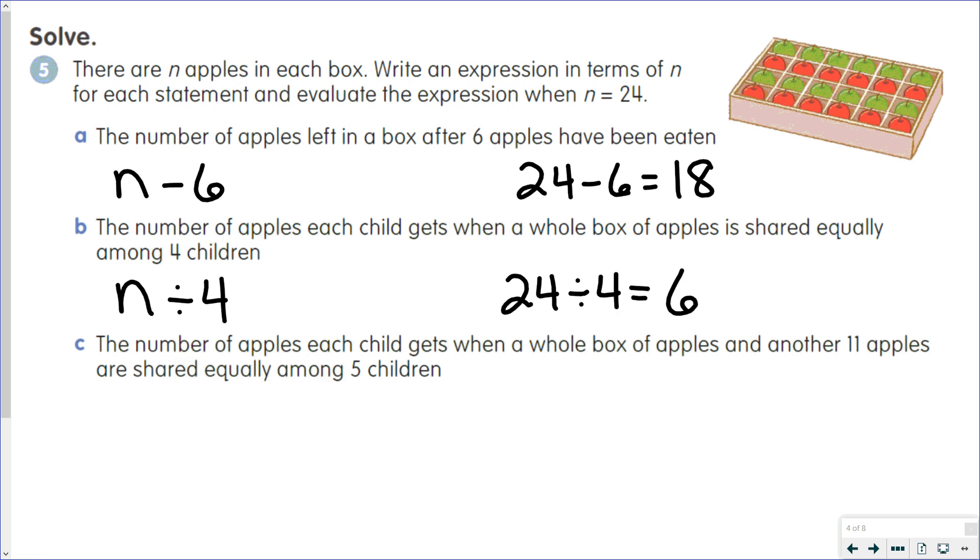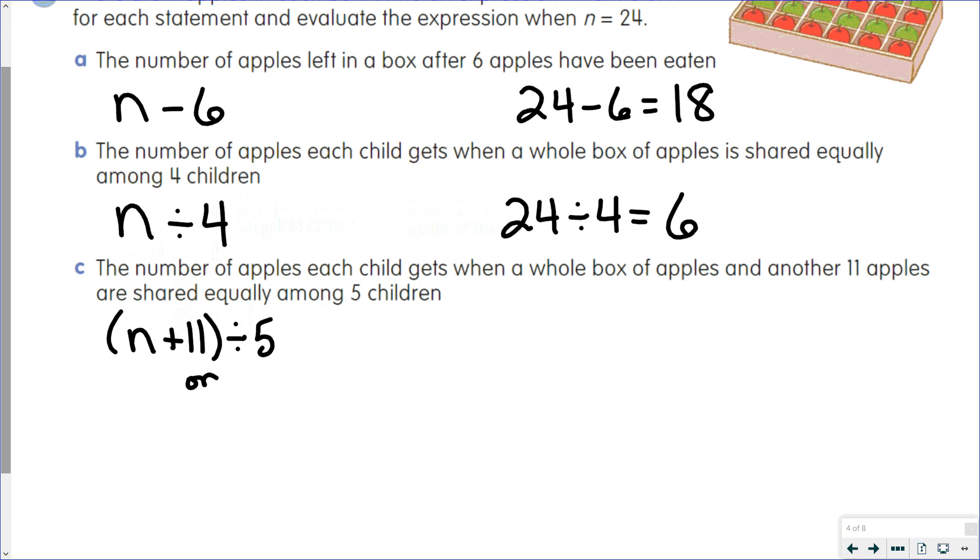The number of apples each child gets when a whole box of apples and another 11 apples are shared equally among 5 children. So one way we could do this is we take the apples, add 11, and then divide by 5. Or we have n plus 11 over 5. Either of those expressions would work. And then we put 24 in for n. And 24 plus 11 is 35. And 35 divided by 5 is 7.